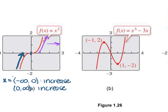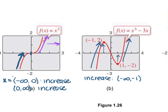For graph b, you have an increase on the left side and also an increase on the right side. Looking from left to right, your increases happen from negative infinity up to the x-value of negative 1, as well as from positive 1 to infinity. We also have a decrease — from left to right, the line's going down — from x equals negative 1 to x equals positive 1, we have a decrease.